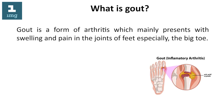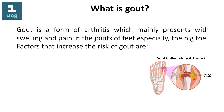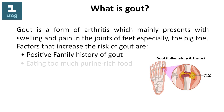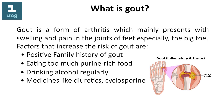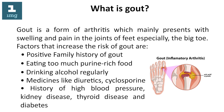What is gout? Gout is a form of arthritis which mainly presents with swelling and pain in the joints of the feet, especially the big toe. Factors that increase the risk of gout include a positive family history of gout, eating too much purine-rich food, drinking alcohol regularly, medicines like diuretics or cyclosporine, and a history of high blood pressure, kidney disease, thyroid disease, or diabetes.